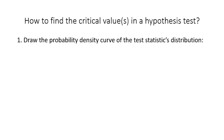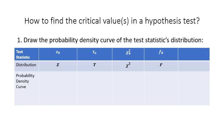In step one, you'll have to draw the probability density curve of the test statistic's distribution. We usually label the test statistic using the lowercase of the name of the distribution. So if you have a test statistic labeled z₀, the z distribution is used; t₀ means the t distribution; chi-squared zero means the chi-squared distribution; and f₀ means the f distribution.